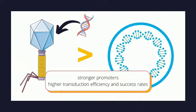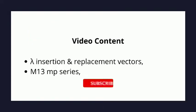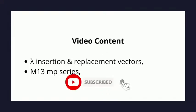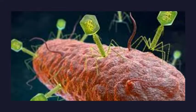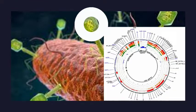The phage vectors we shall cover in this video include lambda insertion and replacement vectors, and M13 MP series. Lambda bacteriophage infecting E. coli has a complex but well-characterized genome of about 49 kbp. Its double-stranded genome is packaged in a protein coat, which as a complete virus particle infects its host bacterium.